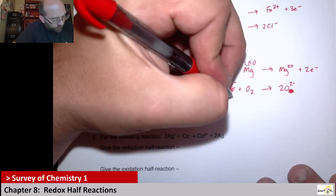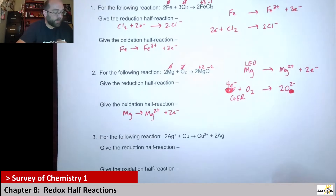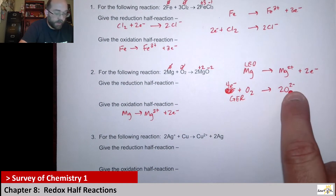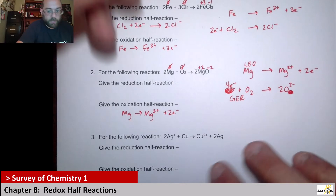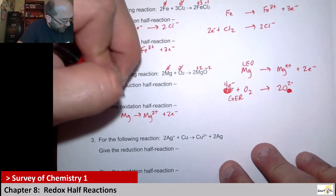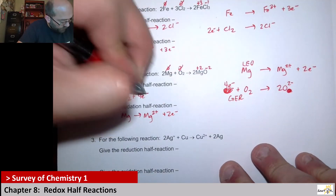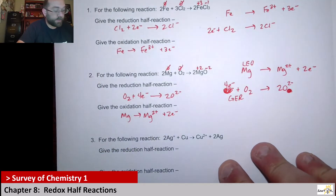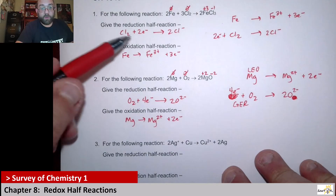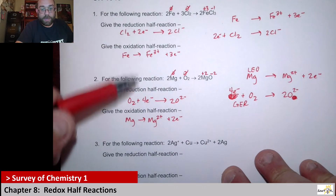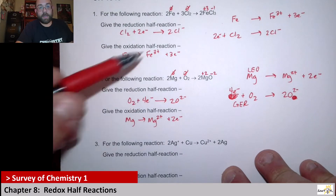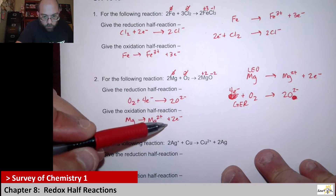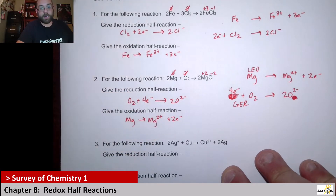This has to be gaining electrons — you go from zero to negative, of course that's gaining electrons. So the reduction half reaction is O₂ plus four electrons gives me two O²⁻. And yet again, reduction has electrons on the reactant side, and oxidation has electrons on the product side.